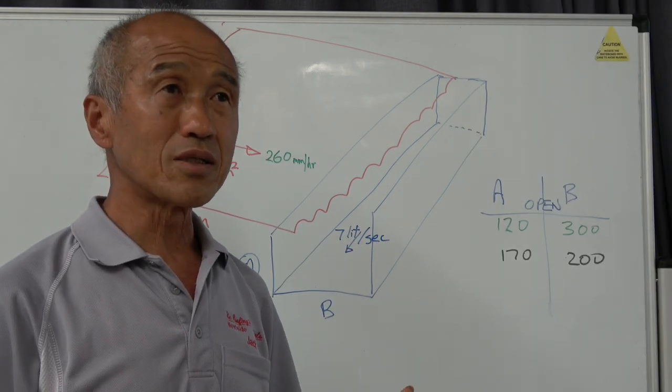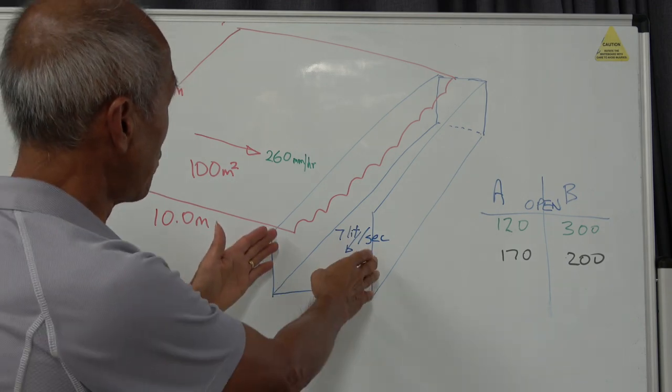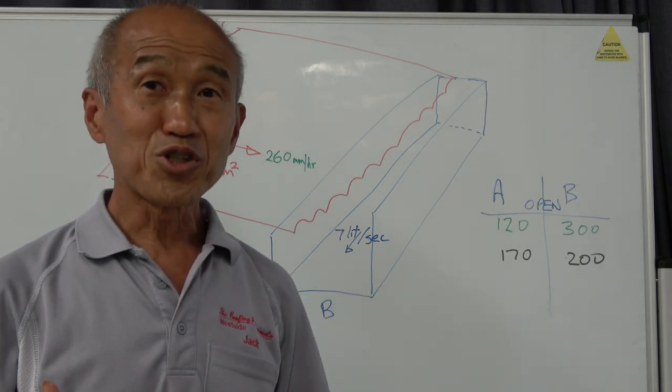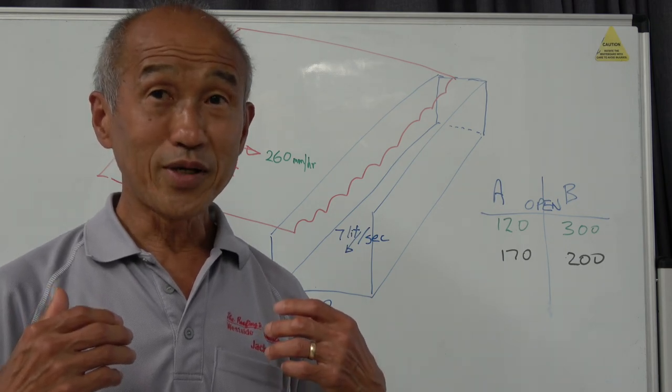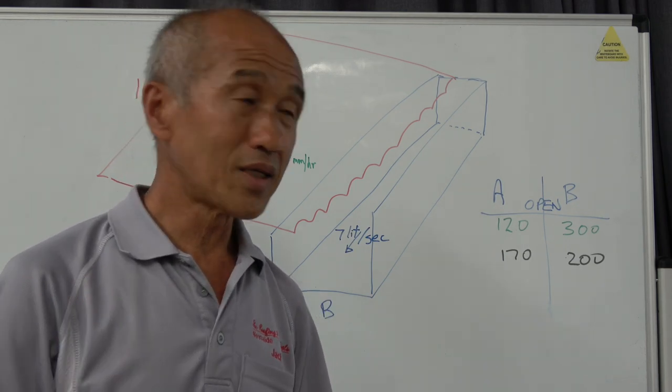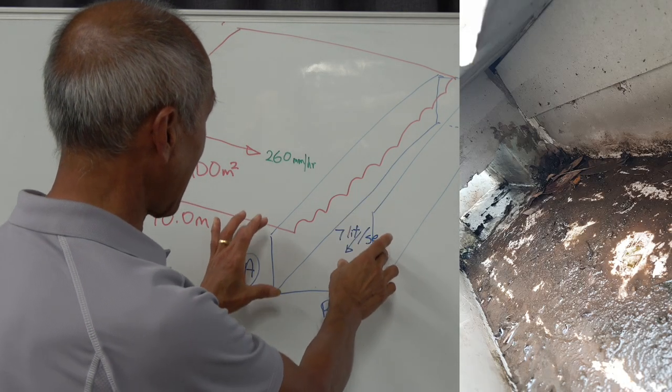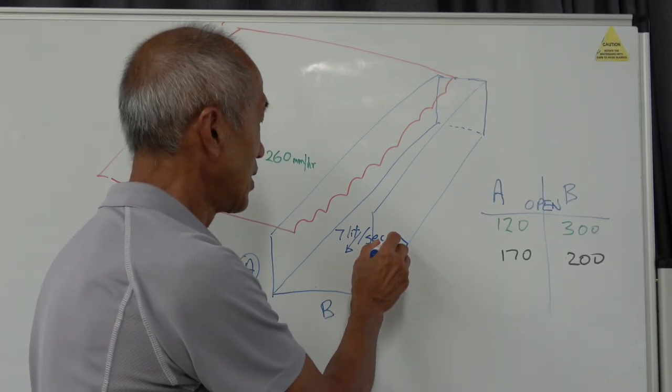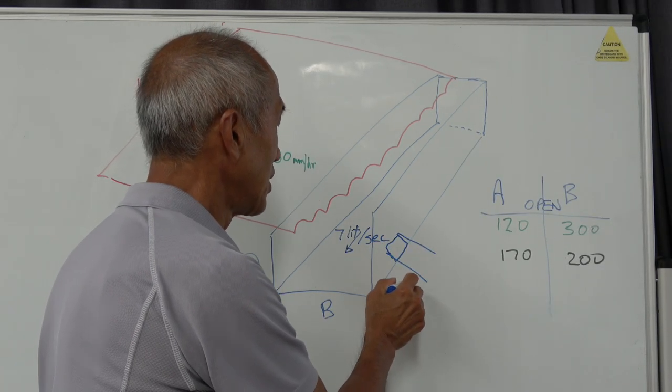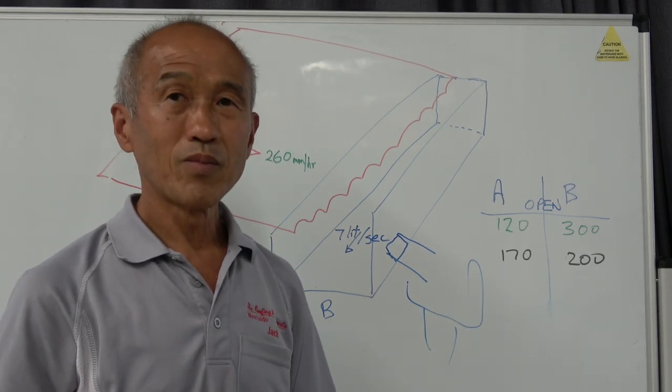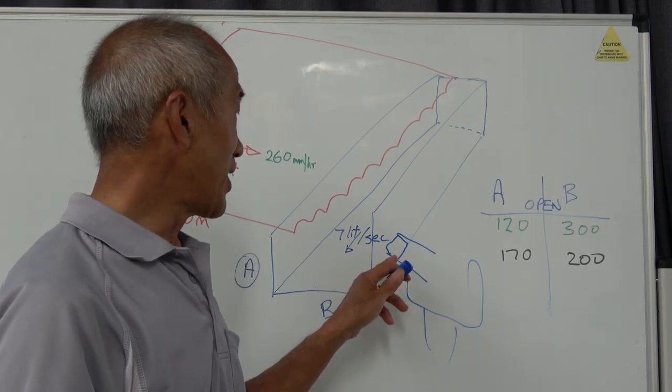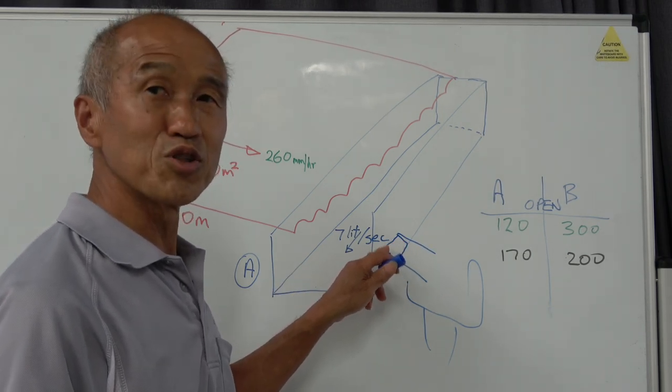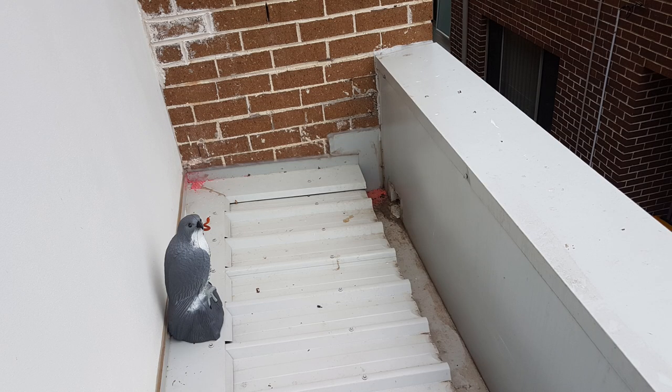Now for whatever reason, hardly any box gutters go full width out into a rain head, and they all should. What people try to get away with is having a box gutter like that and having a small outlet coming out into rain head. Not ideal because you need that cross-sectional area there and this is usually too small. So it can get clogged up and it won't work.